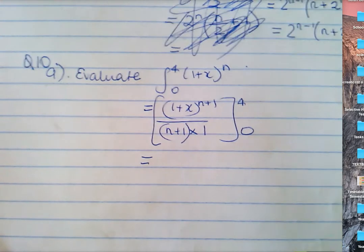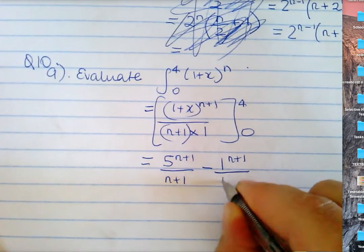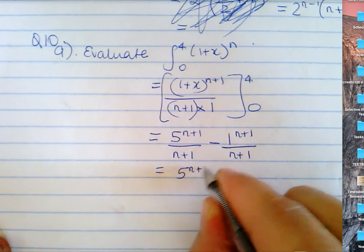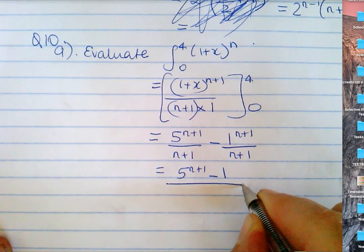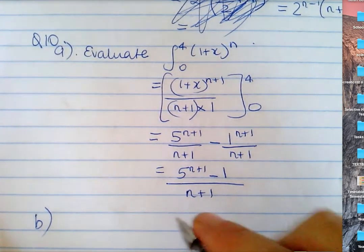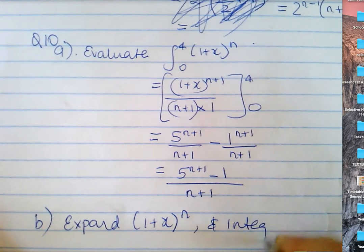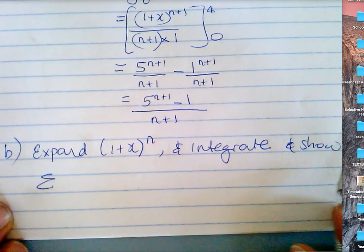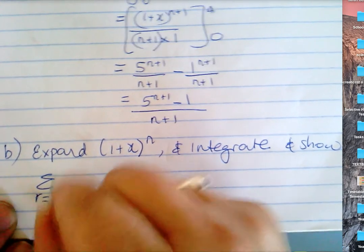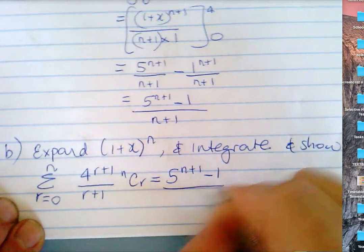You okay with integrating that? You get 5 to the n plus one over n plus one minus 1 to the n plus one over n plus one, which is 5 to the n plus one minus one, all over n plus one — since 1 to the n plus one is always one. That's 10a. In part b, you had to expand 1 plus x to the n, integrate it, and show that the sum from r is zero to n of 4 to the r plus one over r plus one times nCr equals 5 to the n plus one minus one over n plus one.